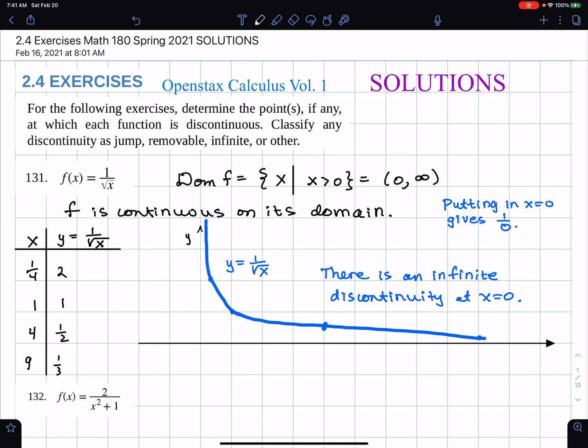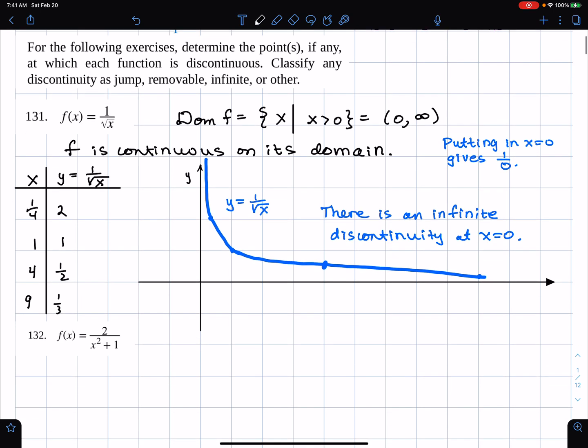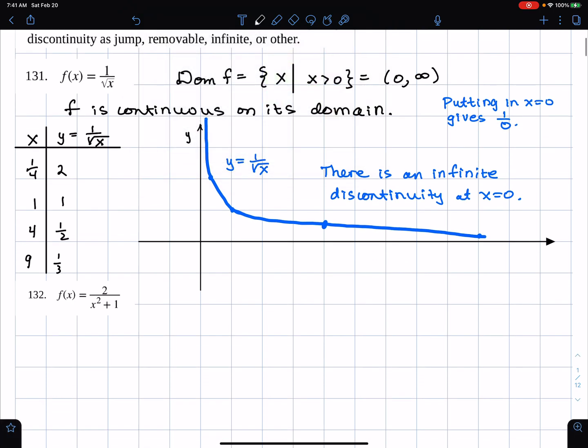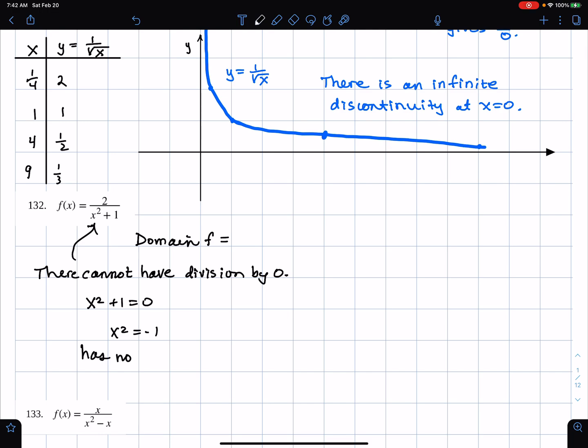We can look at a couple other problems here. This one here is a good one. It's also a rational function, but what's the domain of this guy? If you look at the denominator, we cannot have division by zero. So x squared plus one equals zero, though, is x squared equals negative one. And this has no real solutions. So that's not a problem here. The domain is all real numbers. So there are no discontinuities.